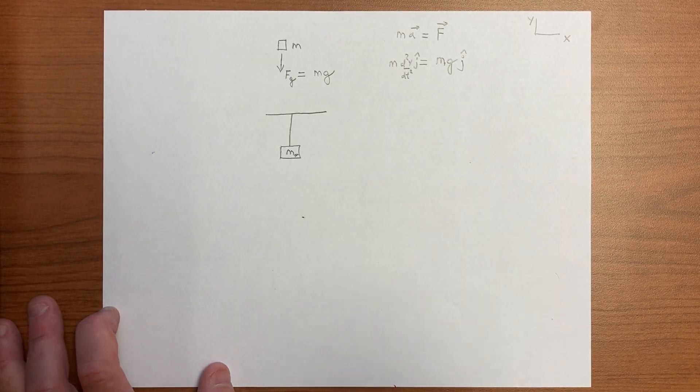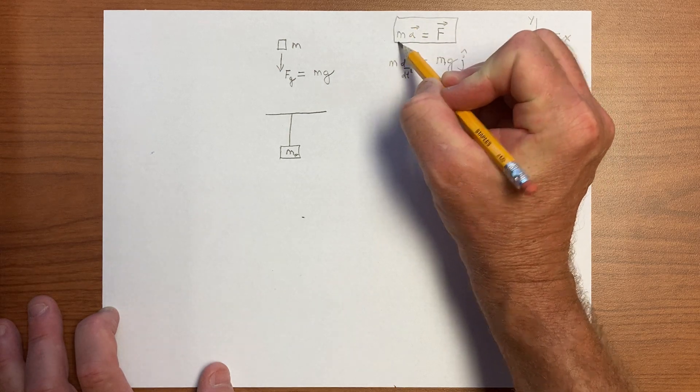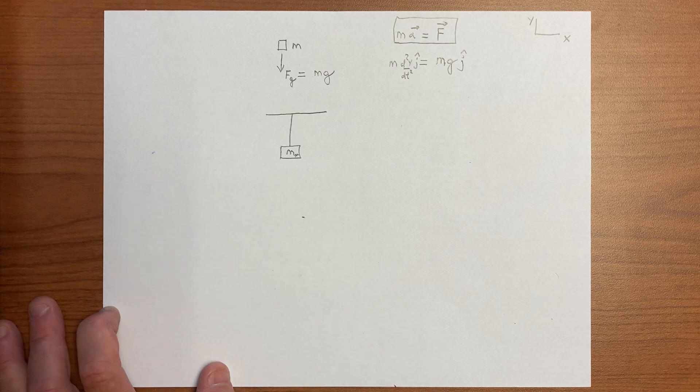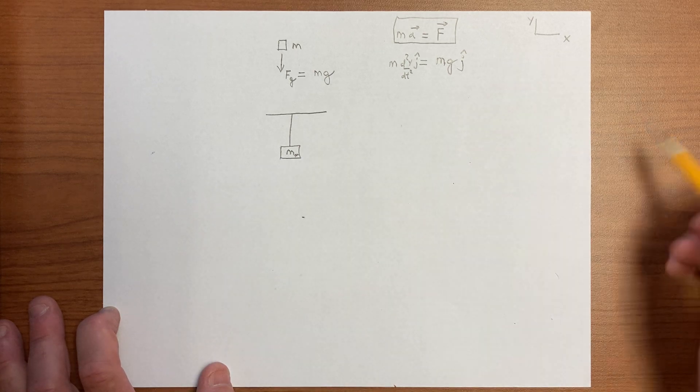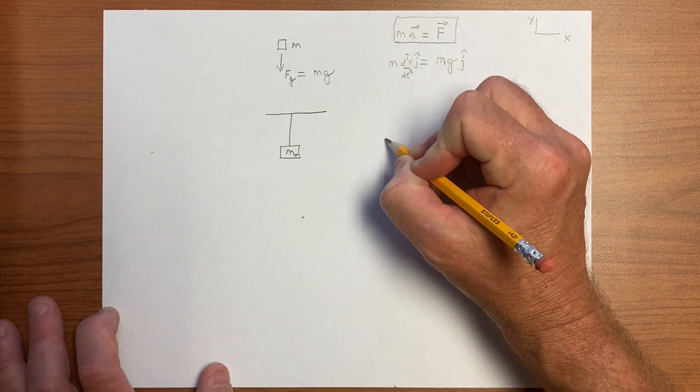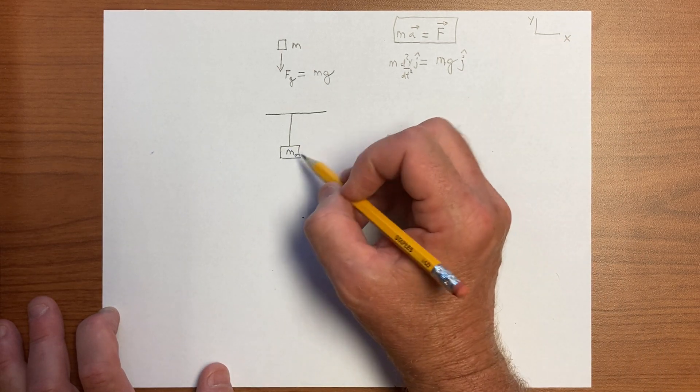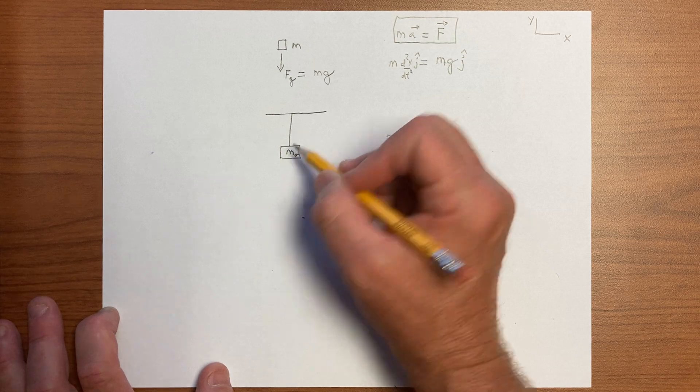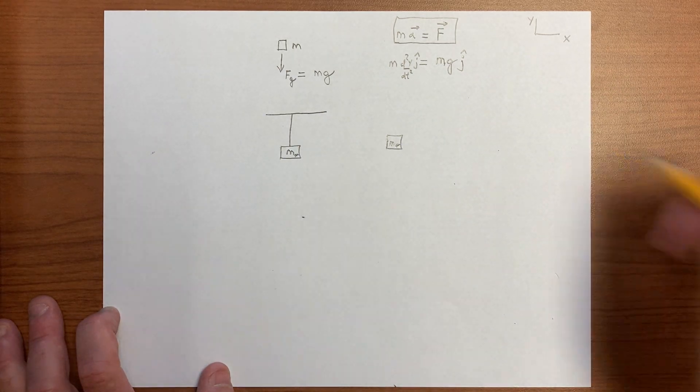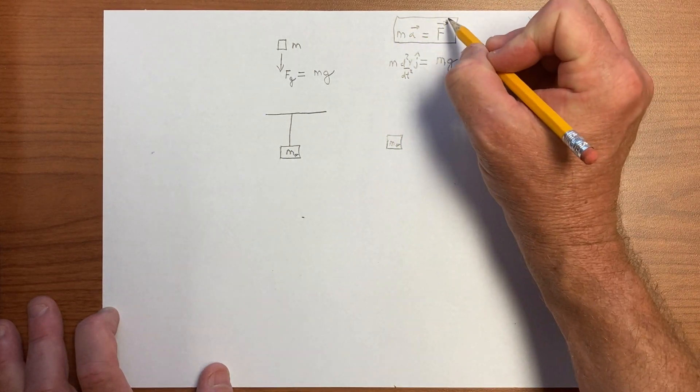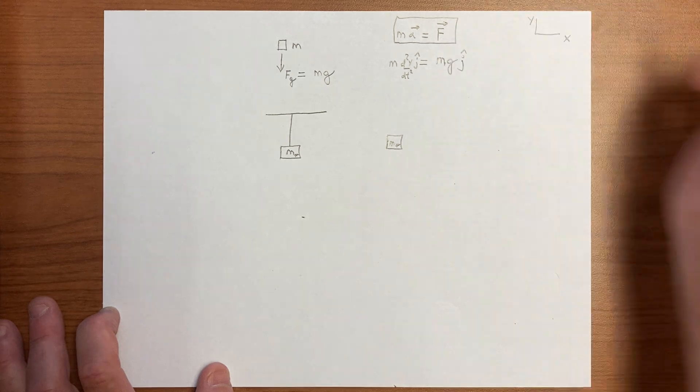So one thing that we can do is recognize that this principle applies in trying to understand the dynamics of the system. ma equals f is the equation that governs the behavior of the system. So we could, for example, do what's called a free body diagram, where we pull the object out. In this case, it's fairly straightforward. There are two forces acting on the object. We could just pull it out. And in trying to apply this, we can make a diagram called a free body diagram that involves all of the forces acting on the object.